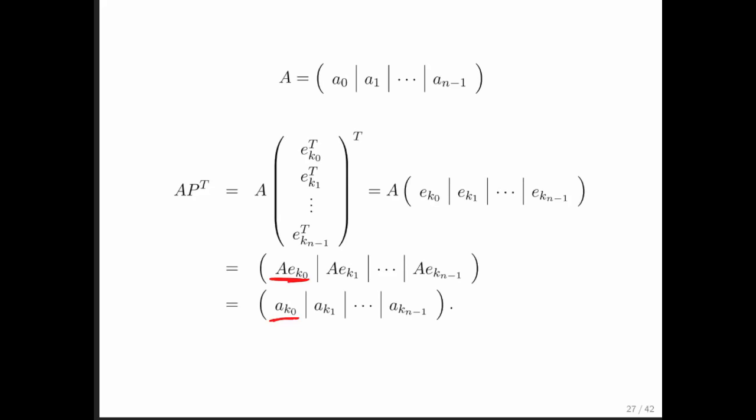And what we conclude is that multiplying A from the right by the transpose of P reshuffles columns of A into the order indicated by the permutation vector little p equals k0, k1, and so forth.